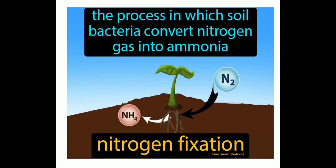The final topic of this chapter is nitrogen fixation. The process in which soil bacteria convert nitrogen gas into ammonia is called nitrogen fixation. You have learnt about the bacterium Rhizobium in previous chapters. It helps in nitrogen fixation in leguminous plants, which have a symbiotic relationship that aids in nitrogen fixation.